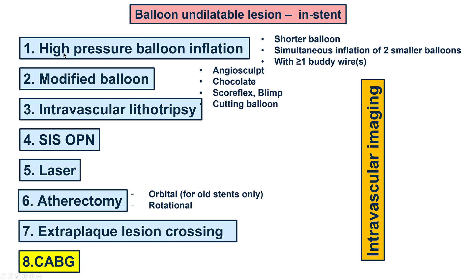The first step is to perform multiple high-pressure balloon inflations. If that doesn't work, use a plaque modification balloon like the AngioSculpt, the Chocolate, the Scoreflex, the Blimp, and the Cutting Balloon. The third step is to use intravascular lithotripsy. Fourth, to use the SIS-OPN very high-pressure balloon. Fifth, to use laser, often with simultaneous contrast injection. Sixth, to do atherectomy, either orbital or rotational, with orbital being avoided for fresh stents but perfectly fine for older stents. Number seven is to do extra-plaque or extra-stent lesion crossing, as seen in previous cases. And eighth is to perform coronary bypass. Intravascular imaging remains critical through all steps to confirm that adequate stent expansion has been achieved.